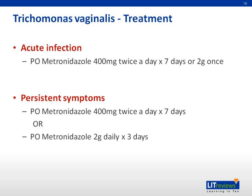First-line treatment requires systemic rather than topical treatment, because the infection is not always confined to the vagina but may involve other parts of the urogenital tract. Oral metronidazole for one week gives a cure rate of 90% to 95%, compared to 50% with topical treatment. Patients with persistent symptoms should be re-treated with oral metronidazole 400 mg BD for another seven days. Repeated failure of treatment may require high-dose oral metronidazole of 2 grams daily for three days. Sexual partners should also be treated, as this will improve cure rates.